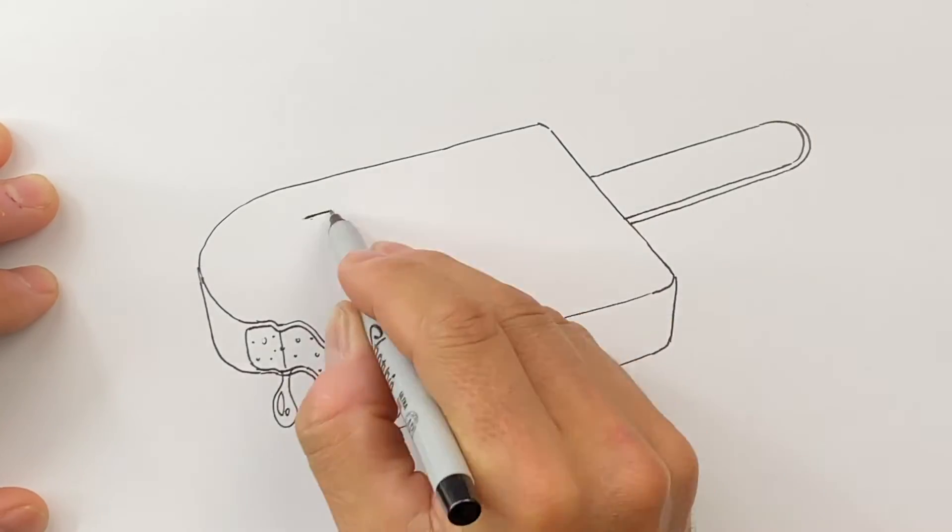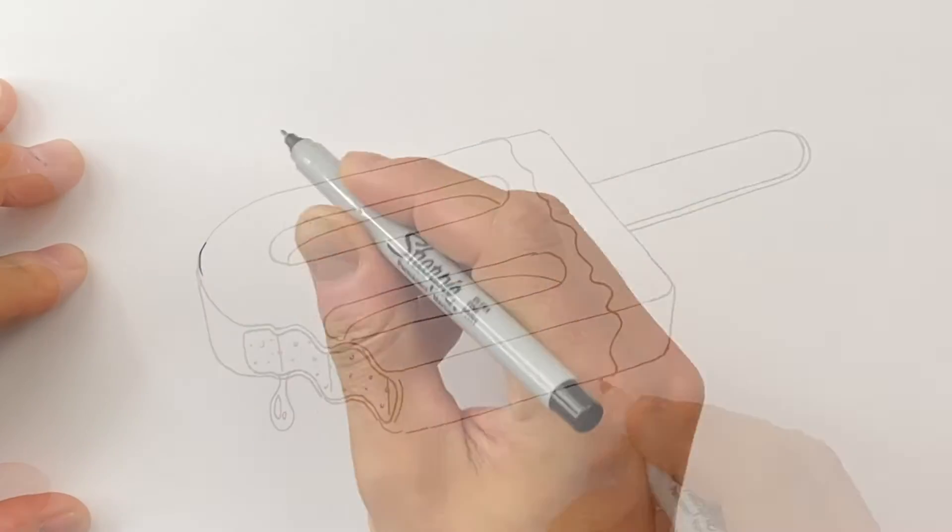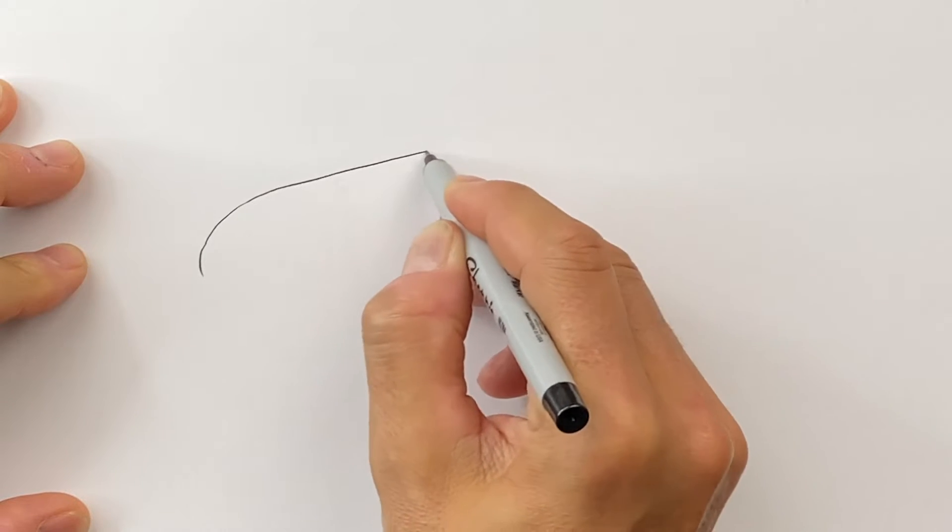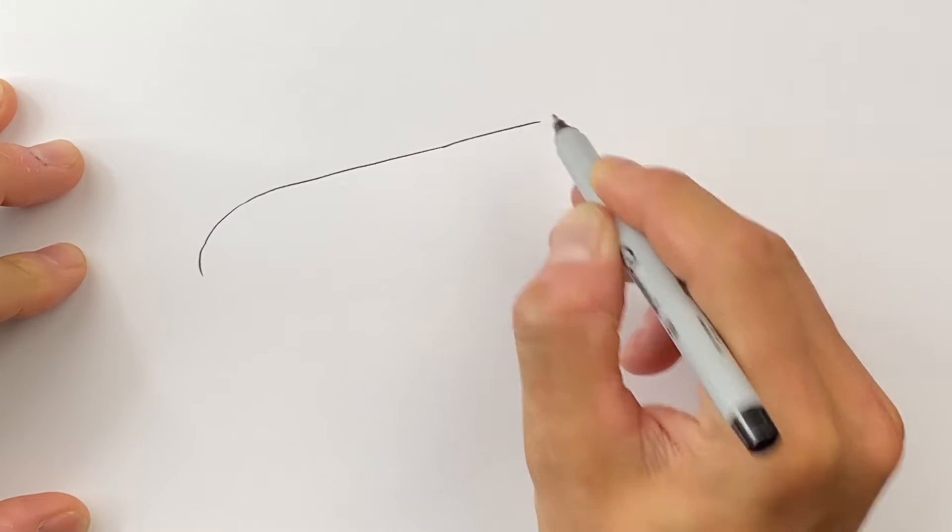I'm going to draw this curved shape over here on the left, and this is going to come over all the way to the right.